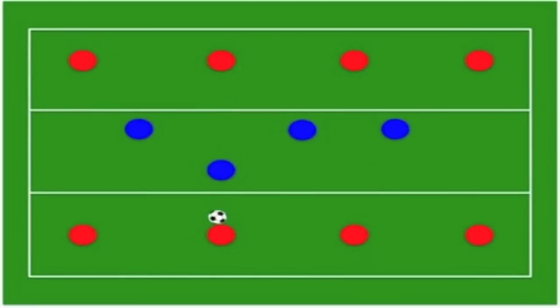The next exercise for defensive organization training is pressure-cover balance. The team in the middle — the guy pressuring the ball is the pressuring player, the two other players to the right and left are the covering players, and the fourth player all the way out on the left-hand side is the balance player. This is just getting good defensive shape as one unit, and this represents the back four.